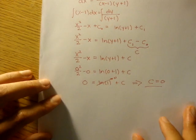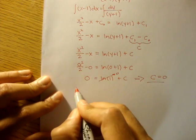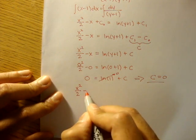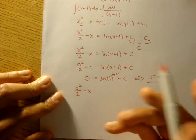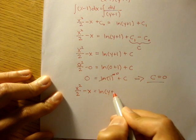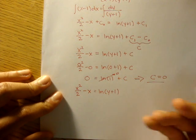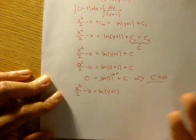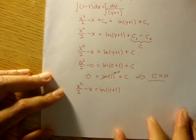And so finally, let's rewrite our streamline equation with c equal to 0. We'll get ln of y plus 1 plus 0, right? So plus our constant, which is 0. So there's our streamline equation.